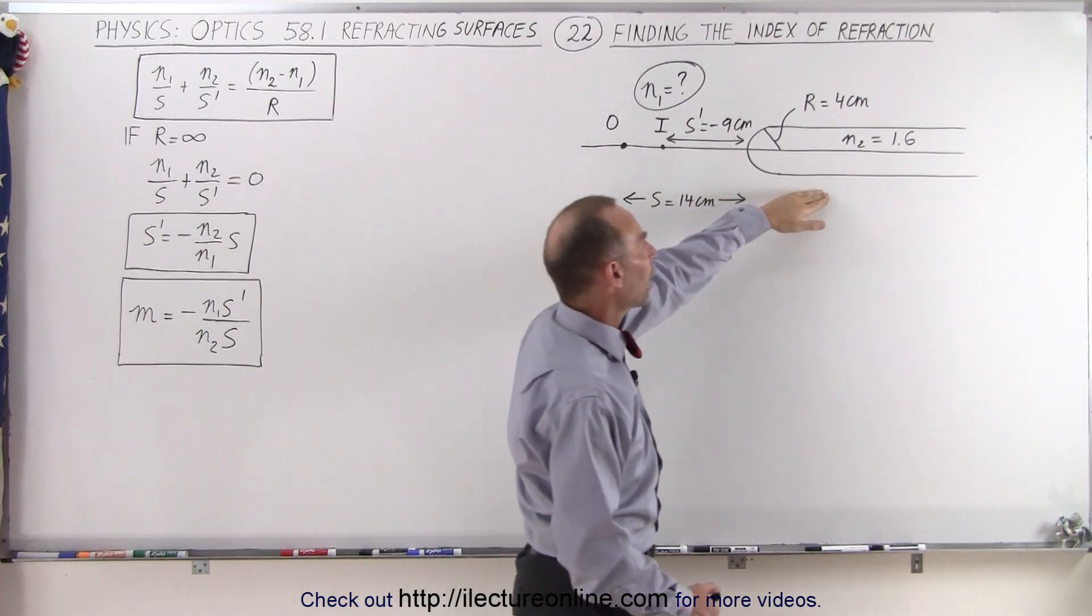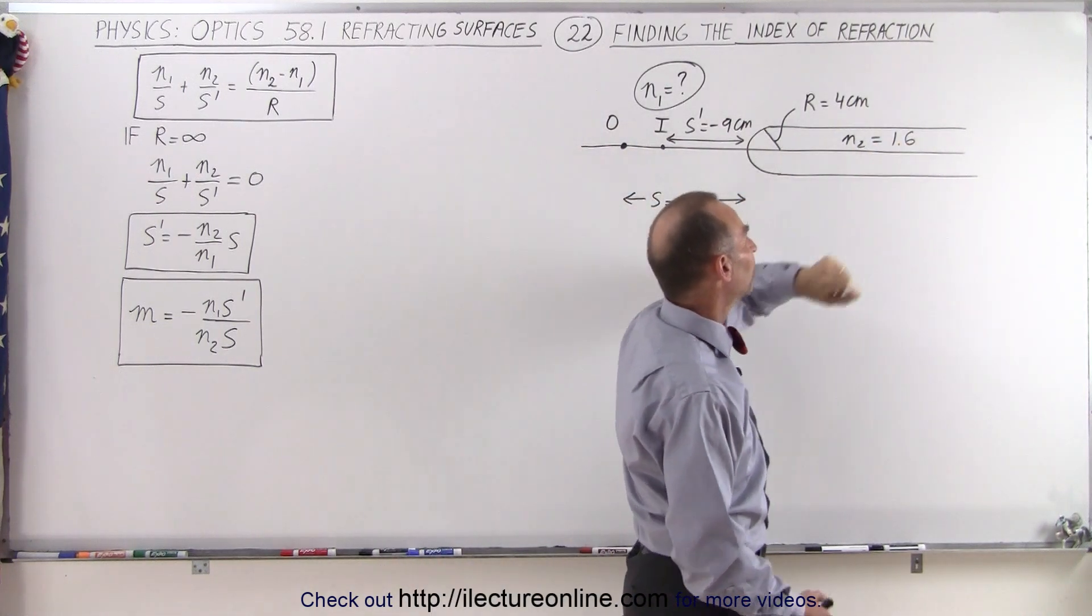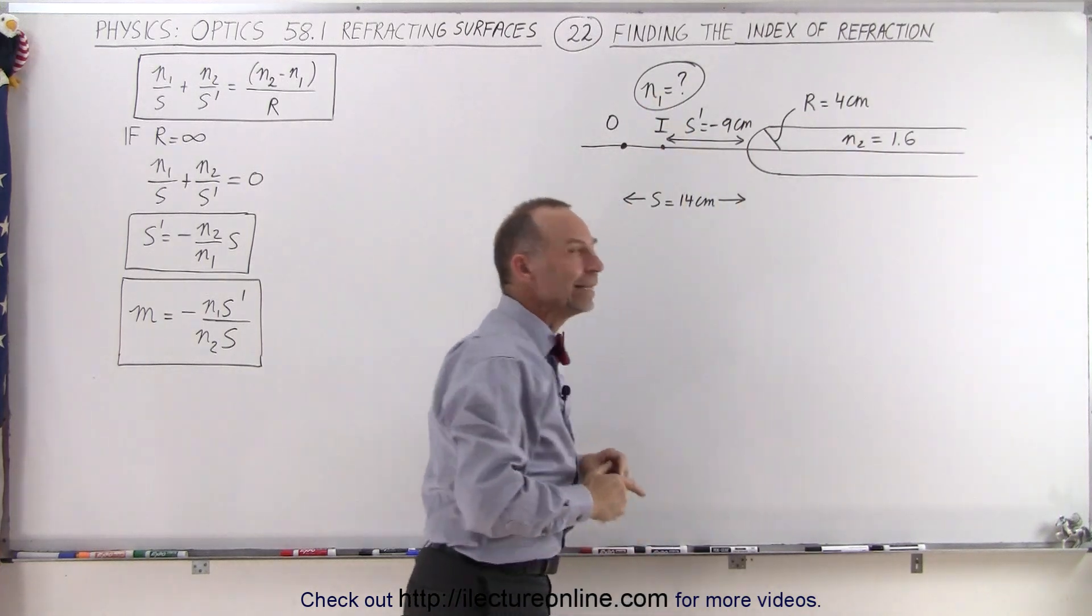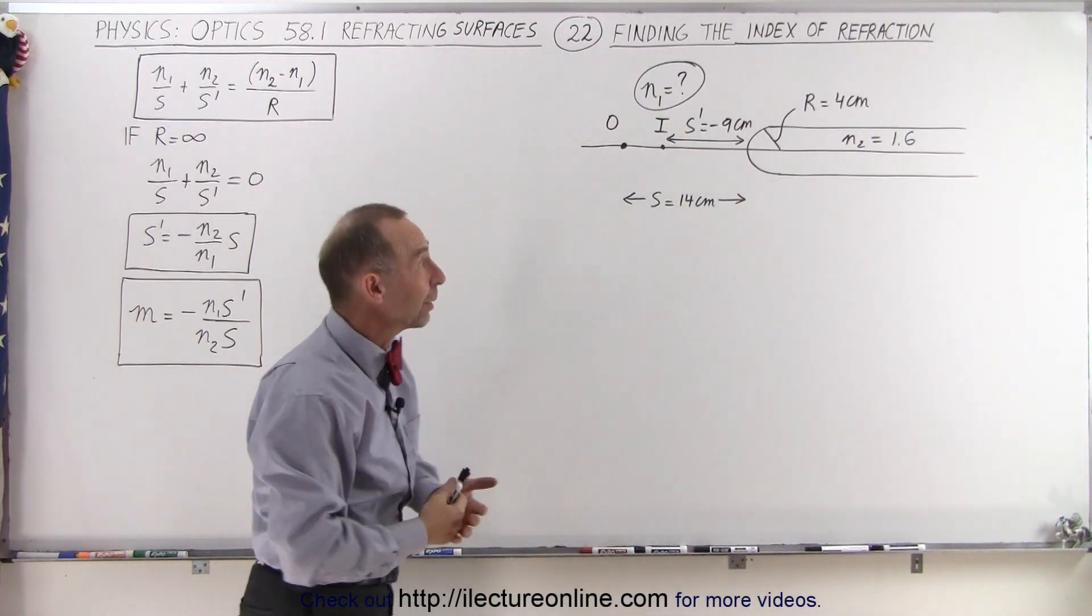We have a glass rod with index of refraction of 1.6 inside a liquid with an unknown index of refraction, and we're trying to find out what that is.